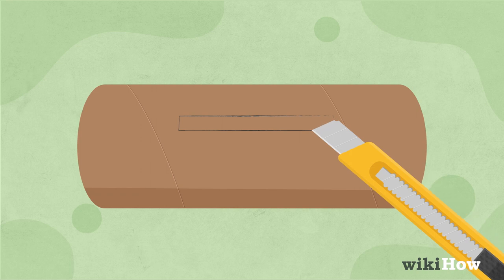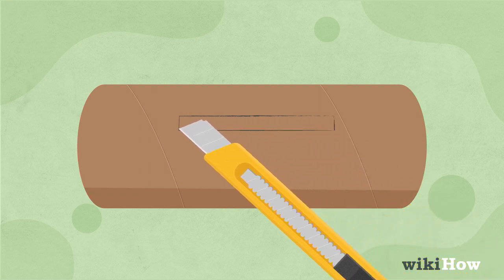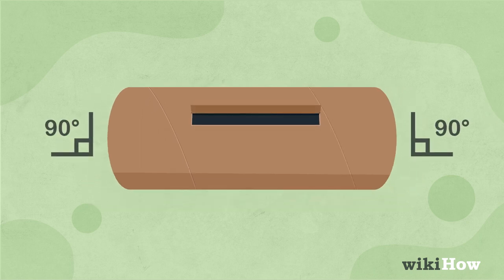Use a craft knife to cut out one of the long sides and both short sides of the outline. Then, fold up the flap at a 90 degree angle.